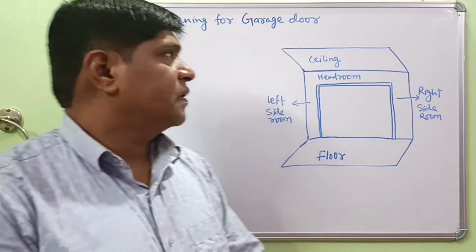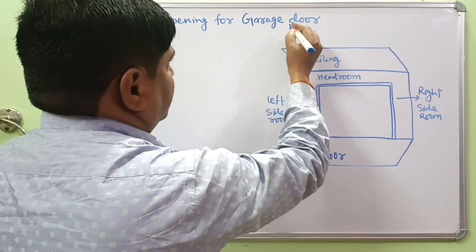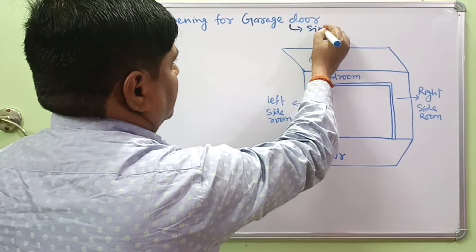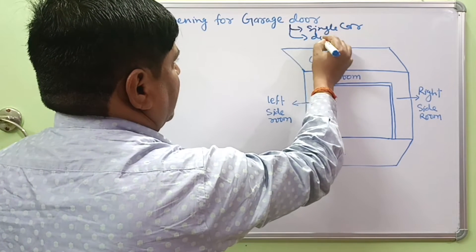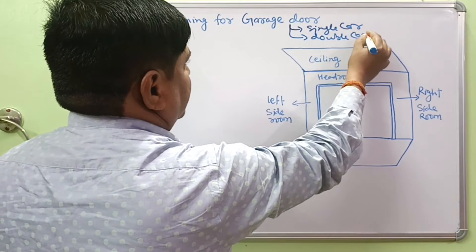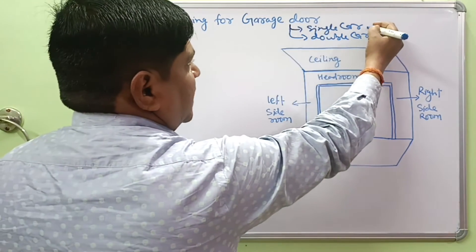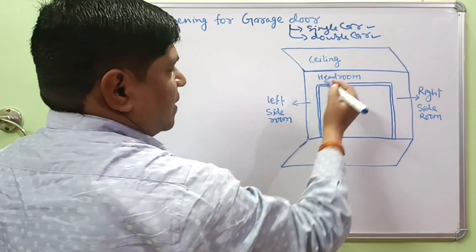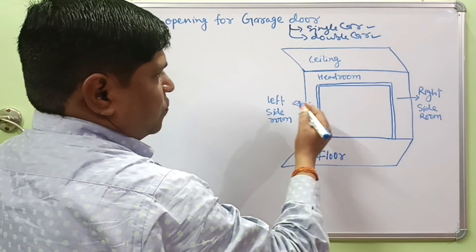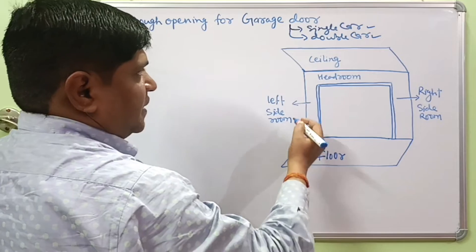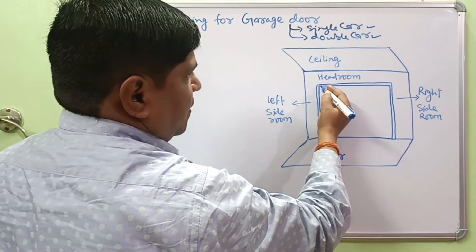Garage doors are used for parking of a single car or a double car. There are different sizes of garage used for single car parking and double car parking. In most cold region countries like the United States, wooden frame houses are commonly built.